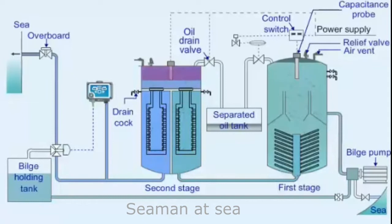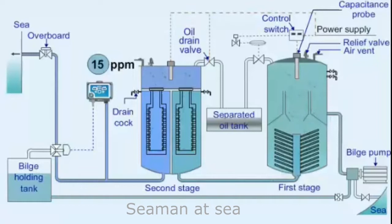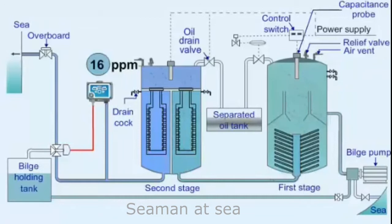The oil content of the final discharge is below 15 ppm. In case the discharge after the second stage exceeds 15 ppm, the monitor senses this and gives an audible and visual alarm in the engine room. At the same time, the monitor sends a signal to the three-way valve on the overboard discharge line, which closes the overboard and opens to the bilge tank.